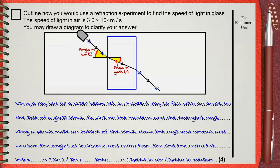use the rule refractive index equals speed of light in air divided by the speed of light in medium to find the speed of light in glass.